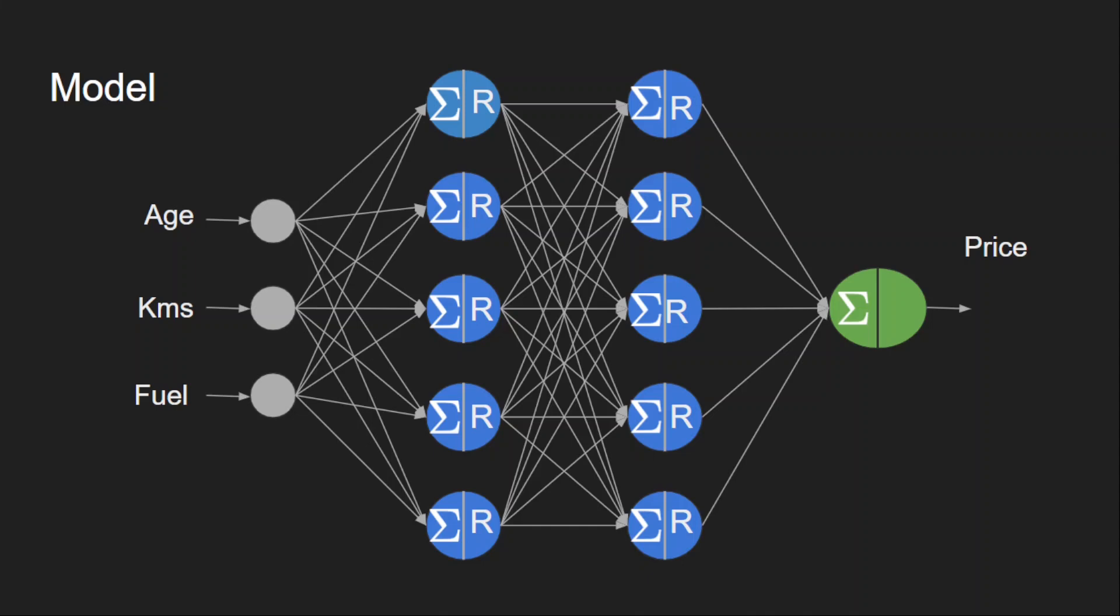But in regression problem, we don't need to have any restriction on the output value. It can be anything. I can't put a limit on the car price. It can be any real value. So, there is no need to add any activation function in the output layer. For classification, we need an activation function in the output layer, because we need the values between 0 and 1. But when you are doing regression, there is no need to have any activation function for the output layer.